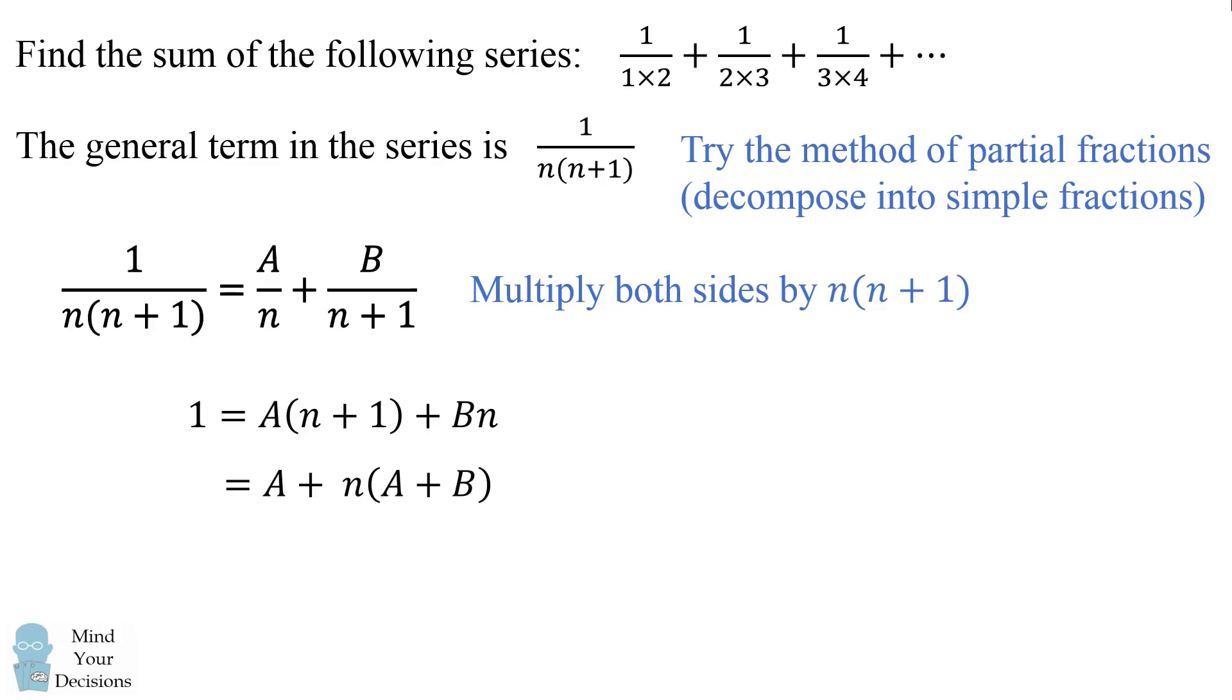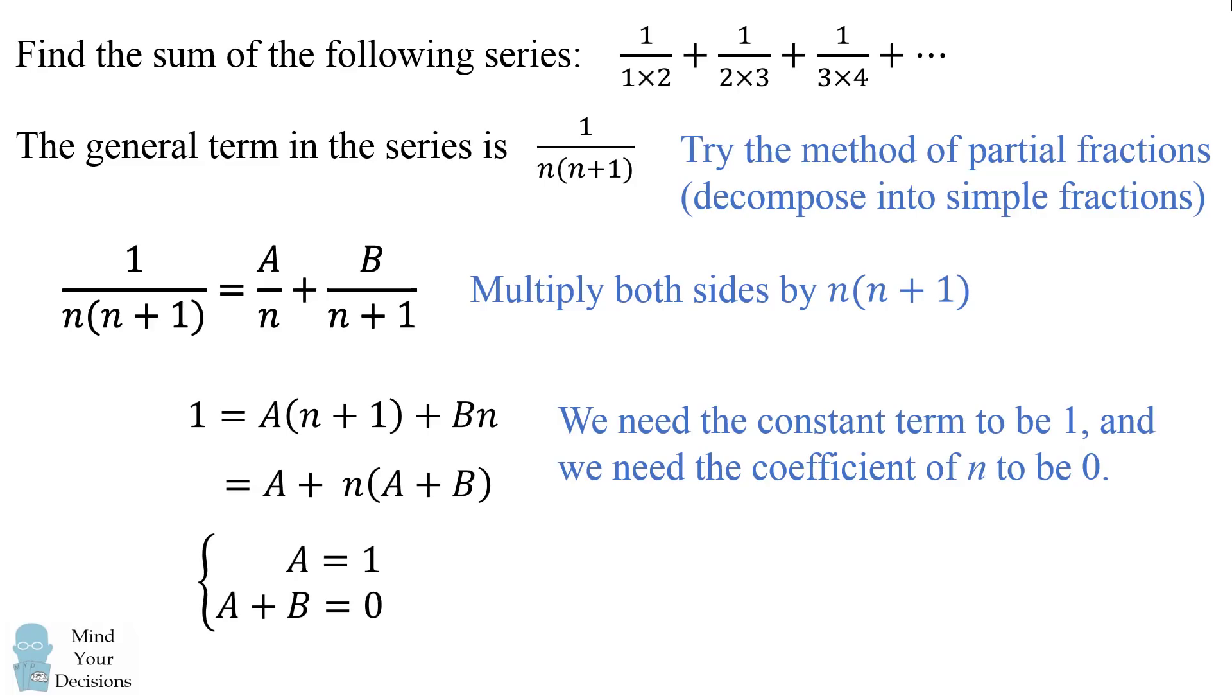We can see from this equation that we need the constant term of A to be equal to 1, and we need the coefficient of n which is A plus B to be equal to 0. So we have a system of equations where A is equal to 1 and A plus B is equal to 0. We can solve this very easily: A is equal to 1 and B is equal to negative 1.